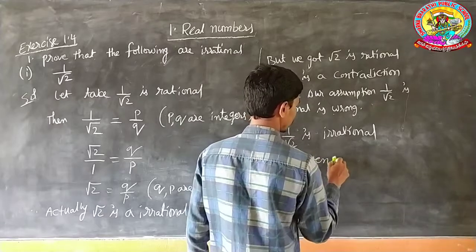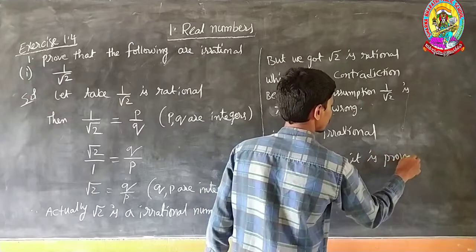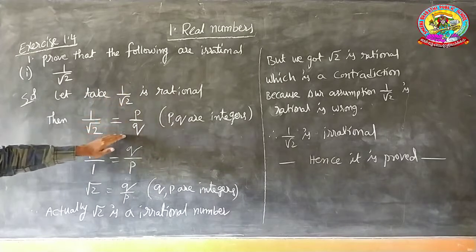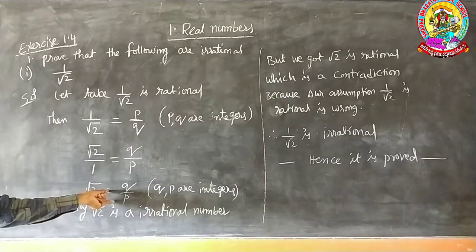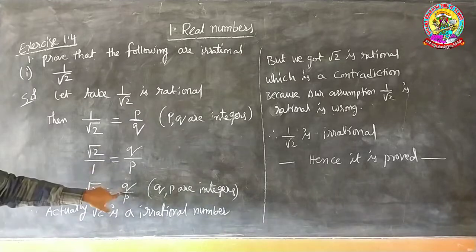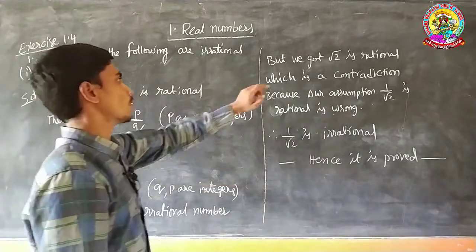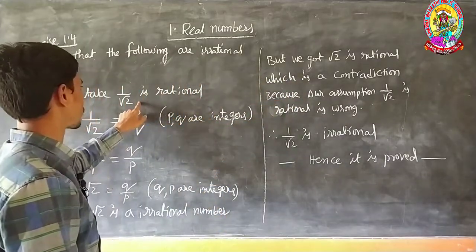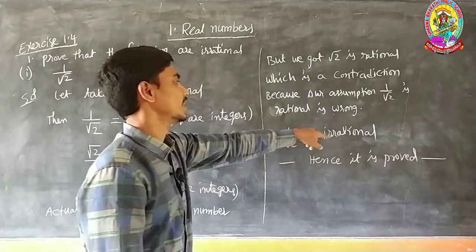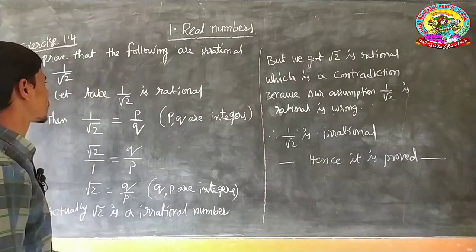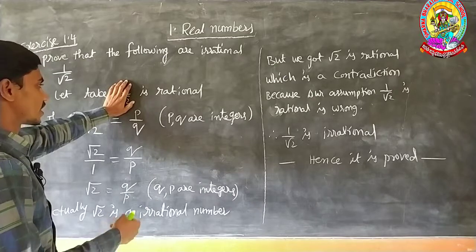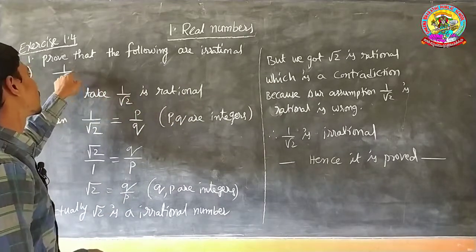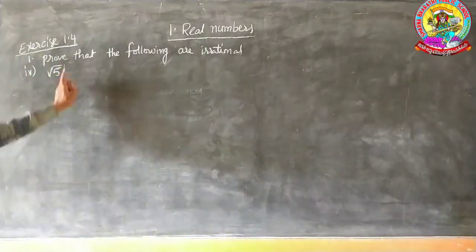Therefore, 1 by root 2 is an irrational number — hence it is proved. Observe what we did: we assumed root 2 is rational, but following the procedure, at some point we got a different answer — it showed an irrational number as a rational number, which is wrong. Both statements are different, which is a contradiction, and that means our assumption is wrong.